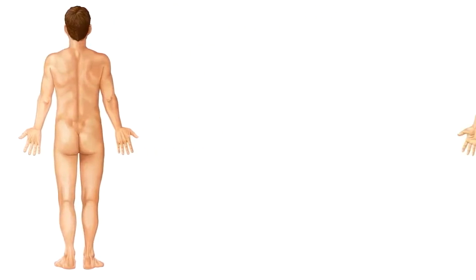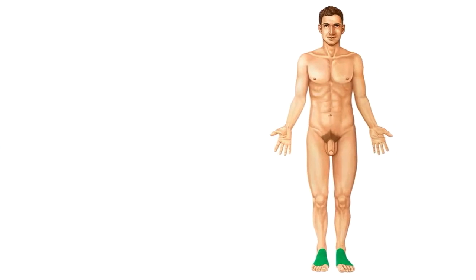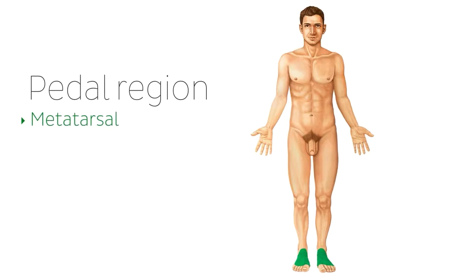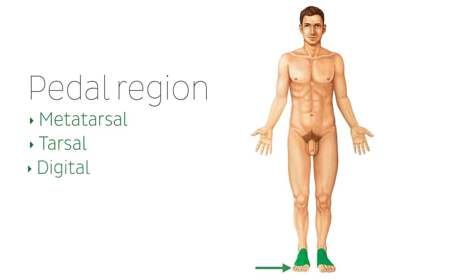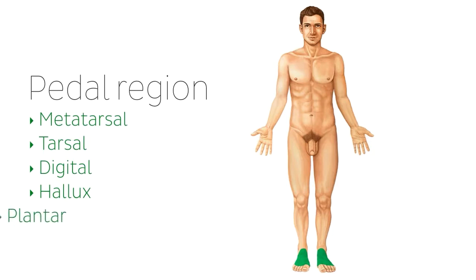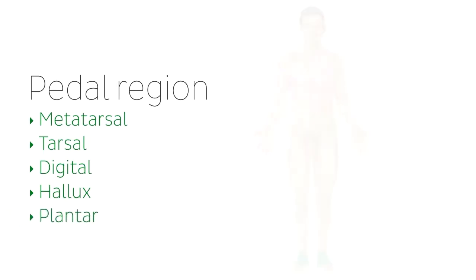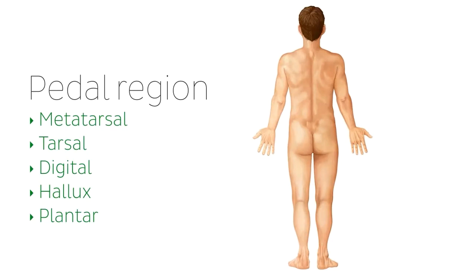Finally, moving on to the pedal region, or foot, we have the following regions: the metatarsal region, highlighted in green; the tarsal region, or the ankle; the digital region, which refers to the toes; and the hallux region, which refers to the big toe. The plantar surface of the foot is called the plantar region. And posteriorly, we can find the calcaneal region in the area of the heel.